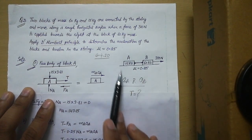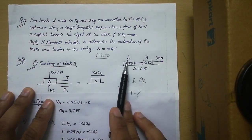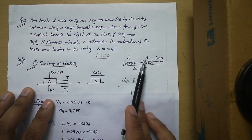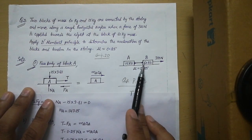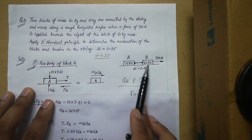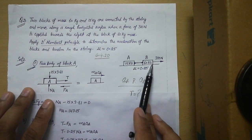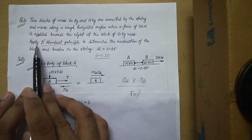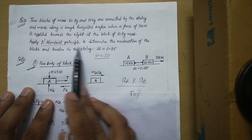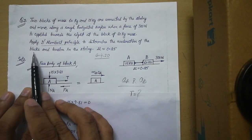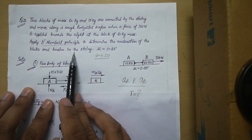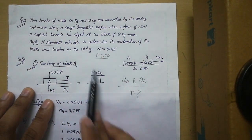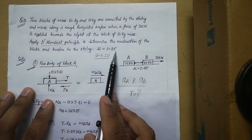The given figure shows two blocks, block A and block B. The mass of block A is 15 kg and the mass of block B is 60 kg. Both are connected with a string, and a 300 N force is applied to the 60 kg block towards the right. We need to apply D'Alembert's principle to determine the acceleration of both blocks (AA and AB), the tension T in the string, and mu is given as 0.25.